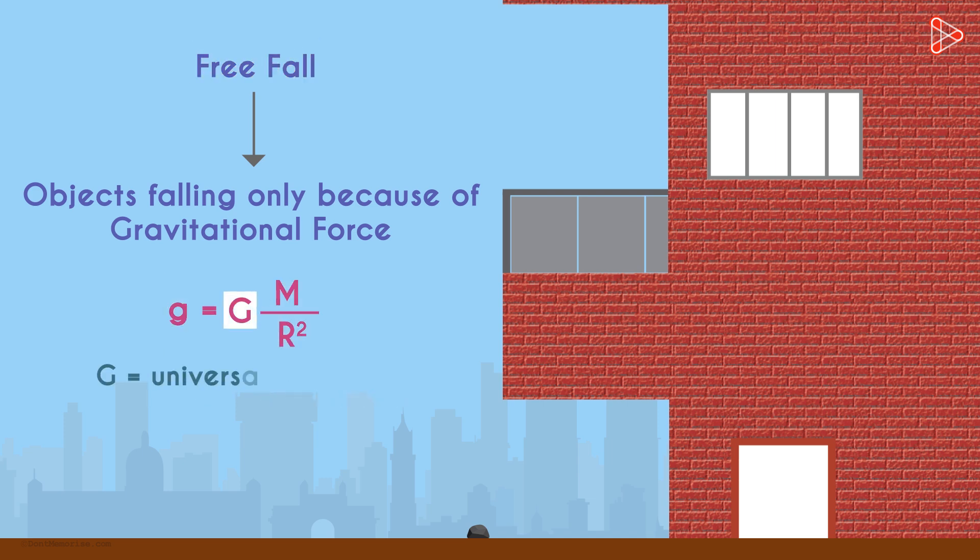Uppercase G is the universal gravitational constant, m is the mass of the earth, and r is the radius of the earth. So for the specific case of objects close to the earth, we get the value of g as 9.8 meters per second squared.